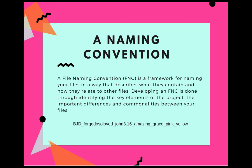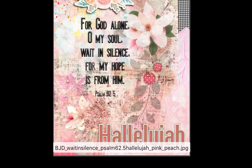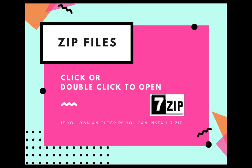It's up to you how to do it, but decide on some kind of naming convention. If you've been doing this for a couple of years and have hundreds of files and want to send a specific one to a friend, you'll know where to find it. For example, from the Hallelujah kit with the verse 'For God alone, my soul waits in silence; my hope is from Him,' I put BJD, 'wait in silence,' underscore Psalm 62.5, the kit name Hallelujah, and then the colors.